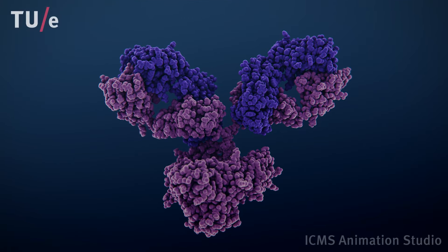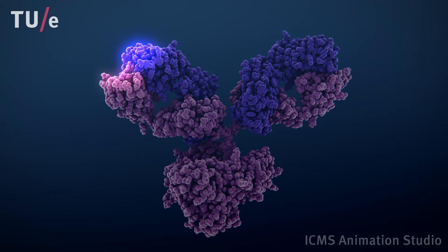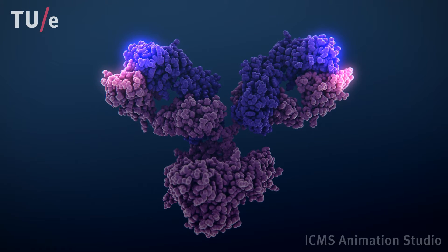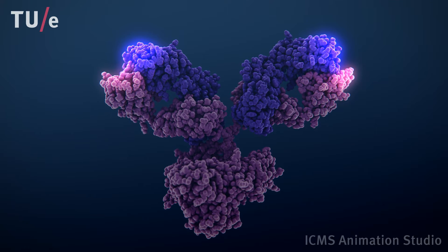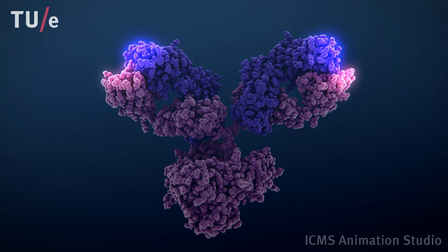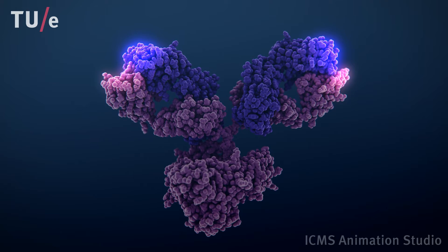Antibodies consist of two heavy chains and two light chains that together form a characteristic Y-shaped structure. At the tip of each arm is the so-called antigen binding site, which is the part of the antibody that specifically binds to its target.